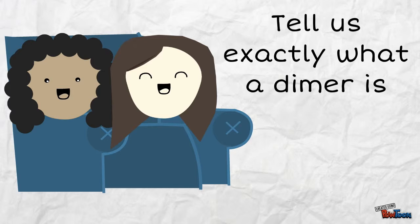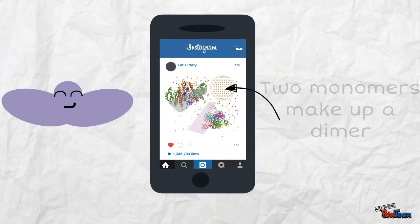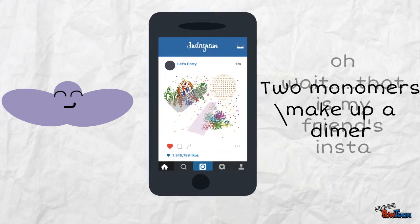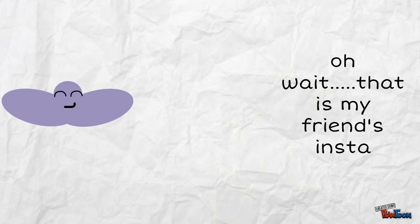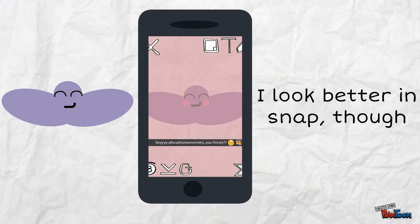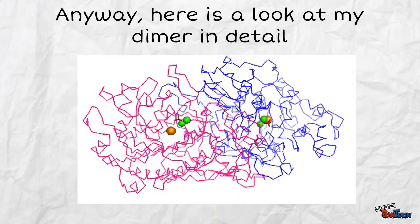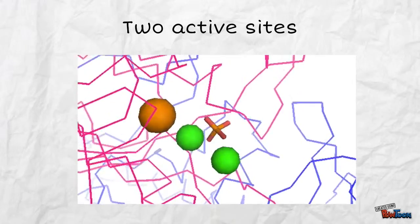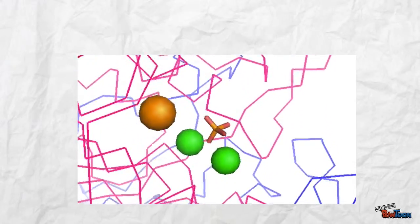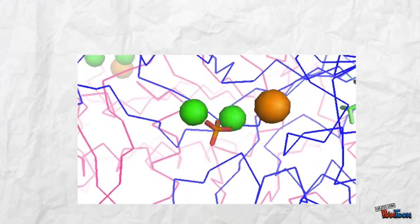What's a dimer? Here's a good look at me in a dimer state — oh wait, that's my friends in the picture. I look better in SNAP though. Okay, for real now, this is a better look of me in a dimer state. I have two active sites where three cations are located: magnesium and two zinc. Catalysis occurs in my active site.